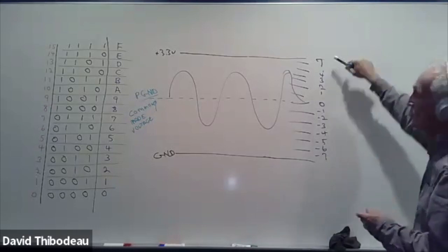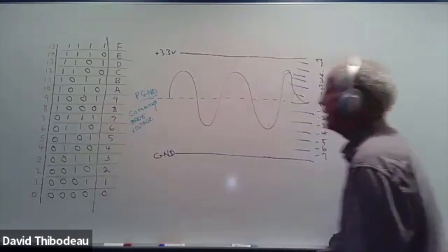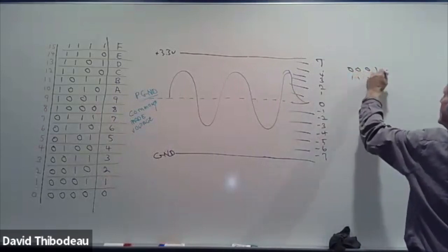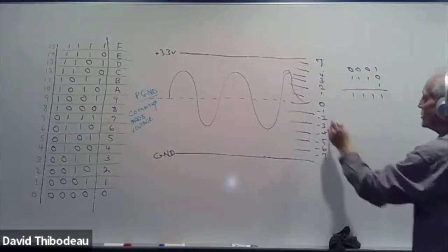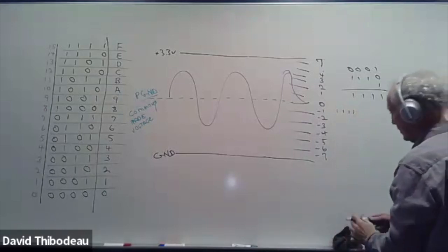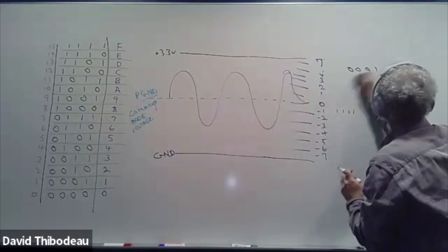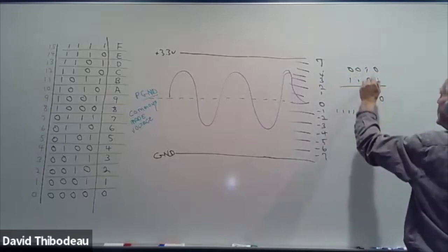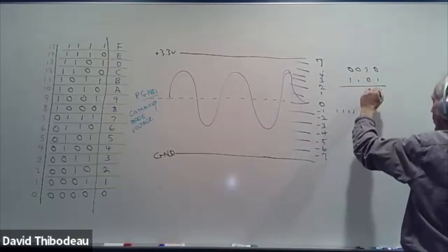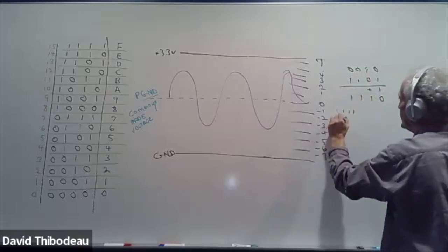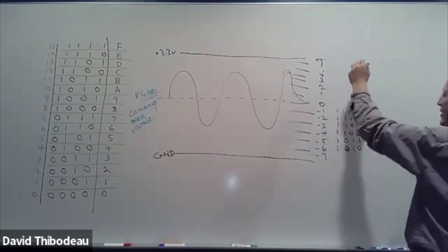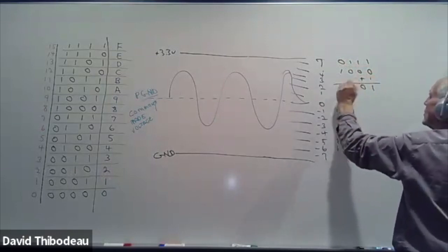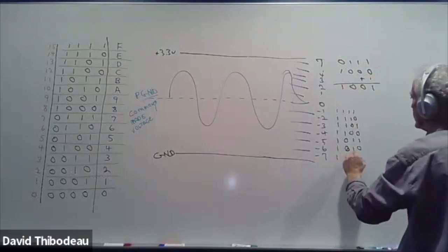Let's practice our two's complement. We know zero through seven. To get minus one: one is zero, zero, zero, one; complement is one, one, one, zero; add one gives one, one, one, one. So minus one is one, one, one, one. For minus two: two is zero, zero, one, zero; complement is one, one, zero, one; add one — one plus one is zero carry one, giving one, one, one, zero. So minus two is one, one, one, zero. For minus seven: seven is zero, one, one, one; complement is one, zero, zero, zero; add one gives one, zero, zero, one. So minus seven is one, zero, zero, one.